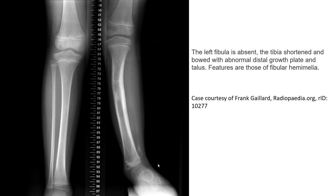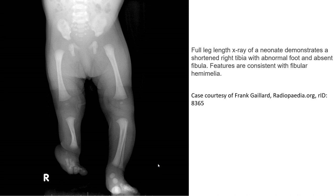In this case, the left fibula is absent, the tibia is shortened, and there is a bone with abnormal distal morphology, talus deformity, consistent with fibular hemimelia. The shortened tibia with abnormal morphology and absent fibula are consistent with fibular hemimelia.